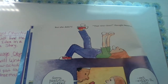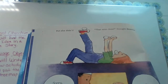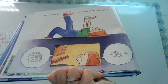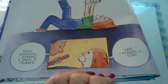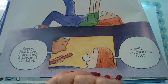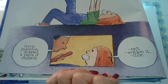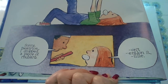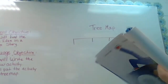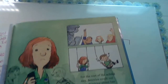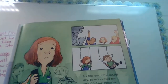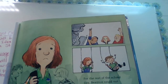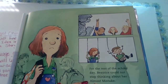Millie said, sorry, I dropped a piece of rhubarb. I think she's trying to say, don't mention it, Millie — but she can't because she has an egg in her mouth. For the rest of the school day, Beatrice could not stop thinking about almost making a mistake.